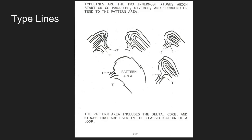The reason we're looking for things like recurving ridges and deltas is because to identify a fingerprint as a loop there are three features that a fingerprint must have. It must have one good sufficient recurving ridge, it must have a delta, and it must have a ridge count. In order to find the deltas we need to talk about how to figure out whether a fingerprint has type lines and where they are, because that's going to help us figure out where the delta is.